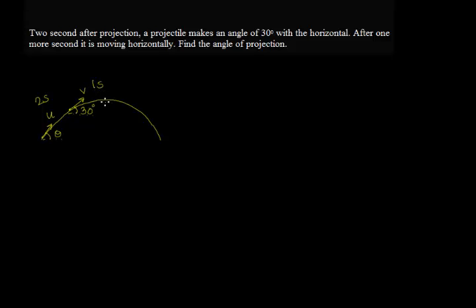Further one second, the velocity becomes horizontal. That is, let's say it is u dash. So at this point, the velocity in the vertical direction is 0.